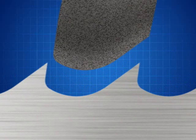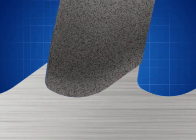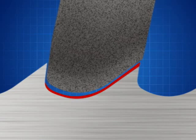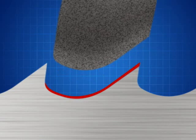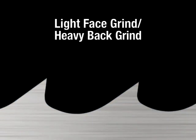Conversely, if the wheel initiates contact further behind the face of the tooth, it will remove too much material from the back of the gullet as the grinding wheel drops to the lowest point and misshape the back of the subsequent tooth. This is called light face grind, heavy back grind.